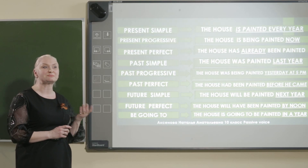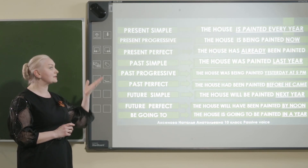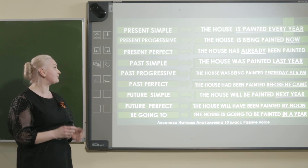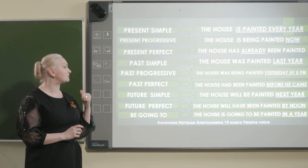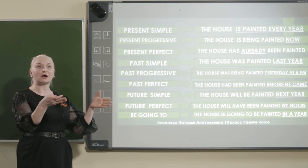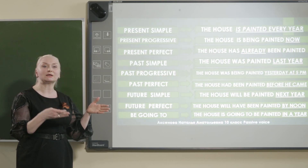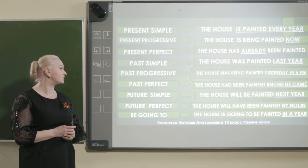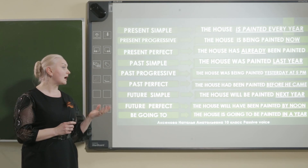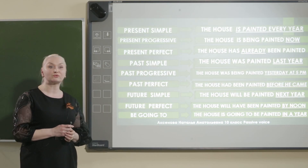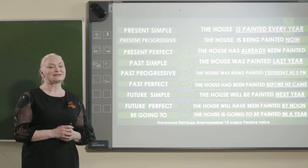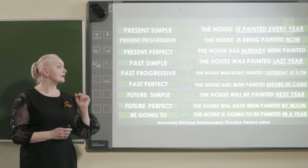Present perfect: the house has already been painted — дом уже покрасили. Past progressive: the house was being painted yesterday at 5 p.m. — когда мы говорим о процессе, дом красили вчера вечером. Past perfect tense: the house had been painted before he came. We have to speak about two actions which happened in past tense.